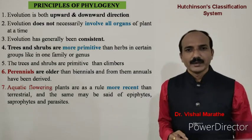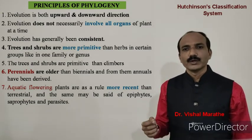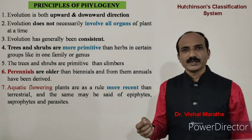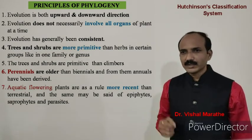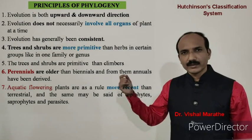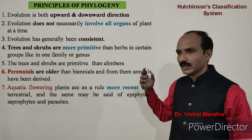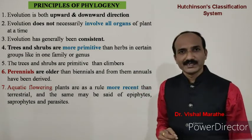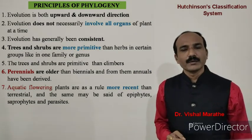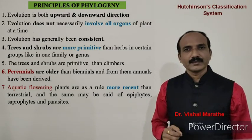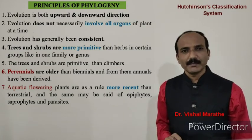The classification is mainly based on principles of phylogeny suggested by John Hutchinson in volume 2 of his book published in 1969. The 24 principles form the entire basis of his classification system. The first principle states that evolution occurs in both upward and downward directions. The second states that evolution does not necessarily involve all organs of a plant at the same time. The third principle is that evolution has generally been consistent.